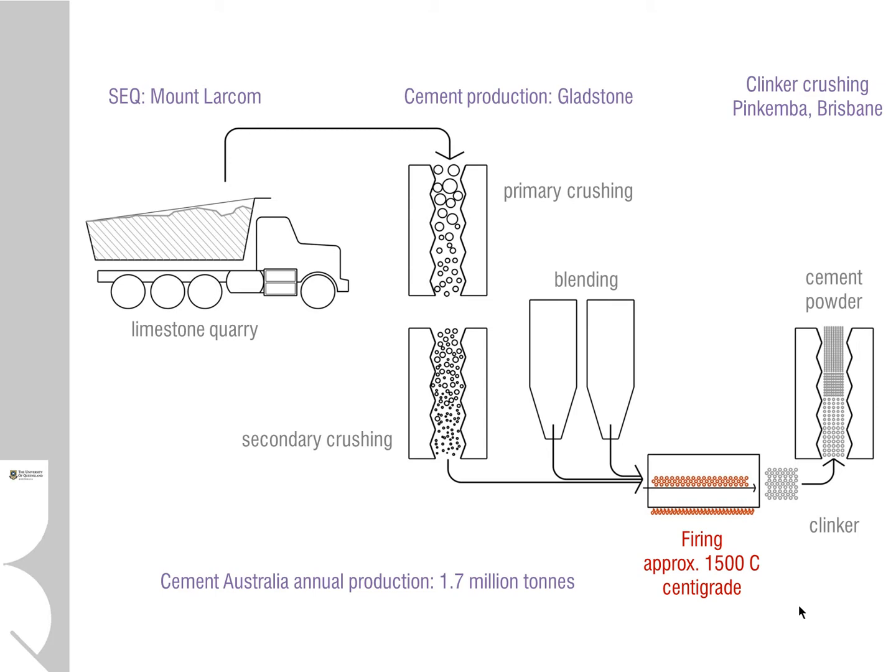Queensland produces quite a lot of cement, about 1.7 million tonnes, and although the material is quite ancient and an old technology, it is very energy intensive. Of recent, there has been a lot of effort into figuring out ways of reducing the embodied energy of the product through additives and also through the efficiency of the firing.